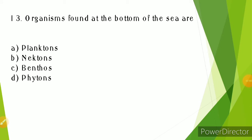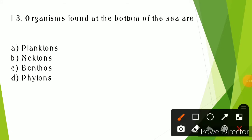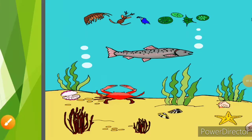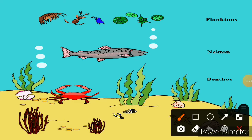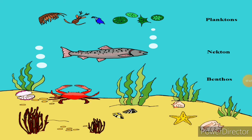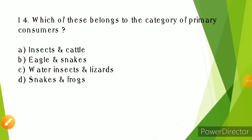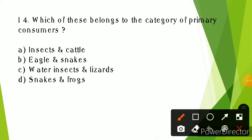Organisms found at the bottom of the sea - the answer is benthos. Benthos are organisms that live at the bottom of water bodies.